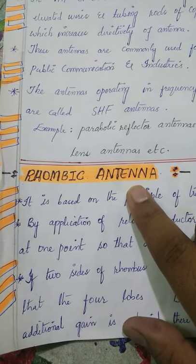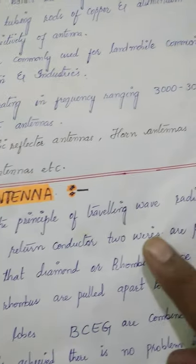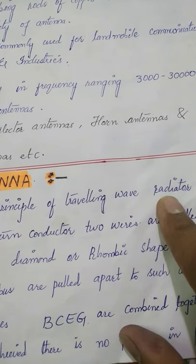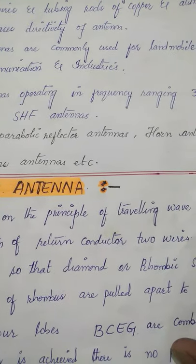Rhombic antenna is a type of antenna which works on the principle of traveling wave radiators, TWR. What is this traveling wave radiator and how it is going to work, that we are going to see.